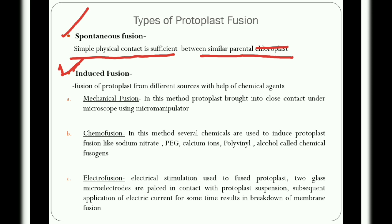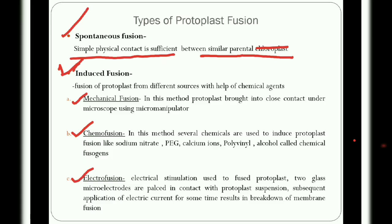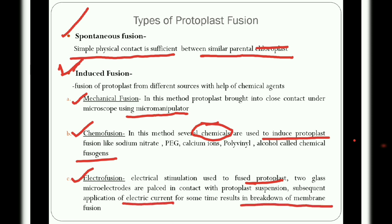In induced fusion, protoplasts isolated from different sources are fused with the help of fusion-inducing chemical agents. There are three types of induced fusion: mechanical fusion, chemo fusion, and electrofusion. In mechanical fusion, protoplasts are brought into close contact under the microscope using a micro-manipulator. In chemo fusion, chemicals such as sodium nitrate, polyethylene glycol, calcium ions, and polyvinyl alcohol — called fuzogens — are used. In electrofusion, electrical stimulation is applied via two glass micro-electrodes placed in the protoplast suspension, causing membrane breakdown and fusion.